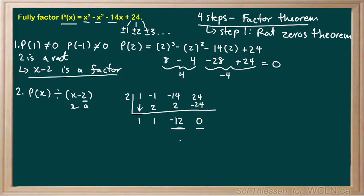24 plus negative 24 is 0. So our remainder is 0. Our constant term of the quotient is negative 12, the x coefficient is 1, and the x squared coefficient is also 1. So our quotient is x squared plus x minus 12. This is our quotient, q of x.